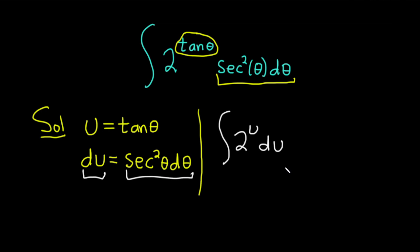Now at this point we have to use a formula. I'm going to refresh your memory on the formula. If you have the integral of a to the x dx, this is equal to a to the x over the natural log of a plus our constant of integration capital C. So this is a very powerful formula.